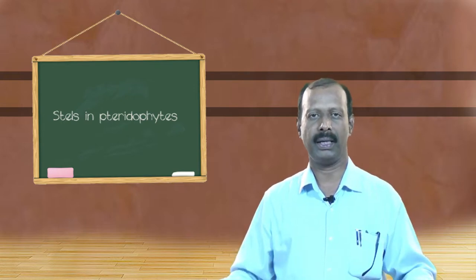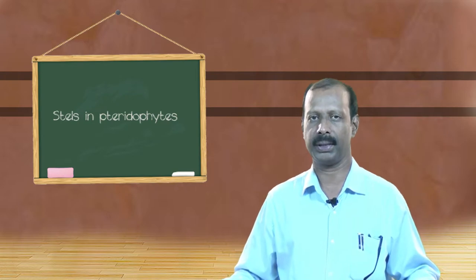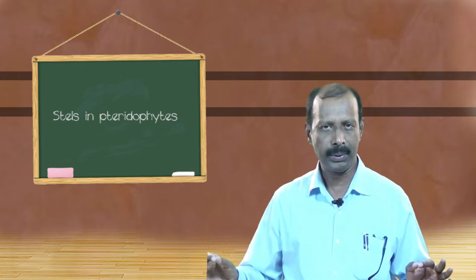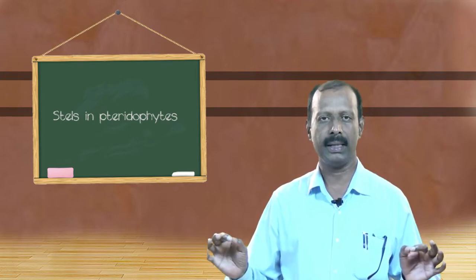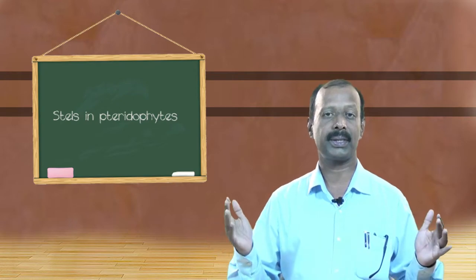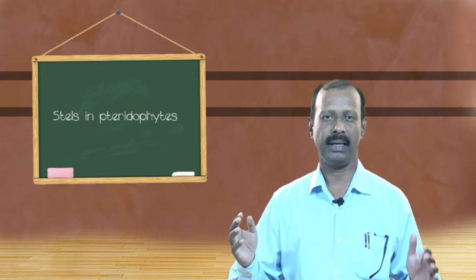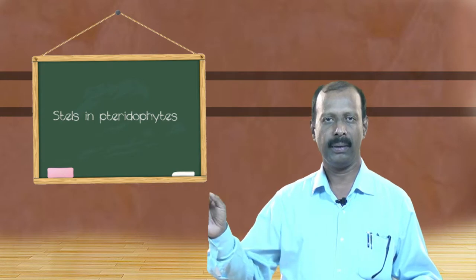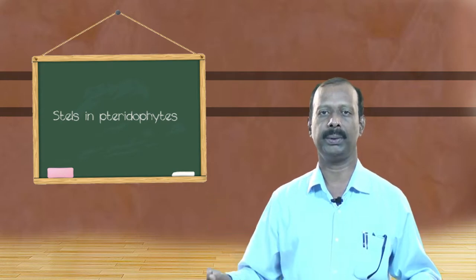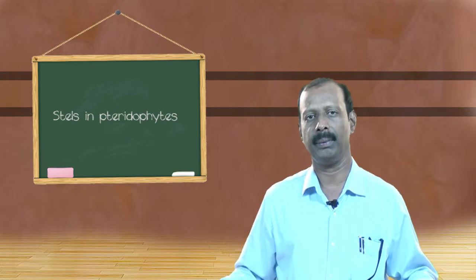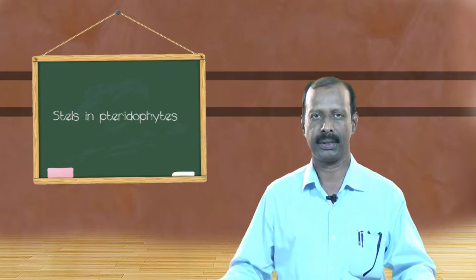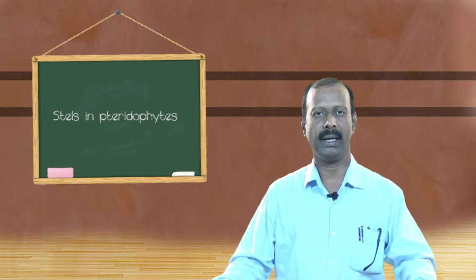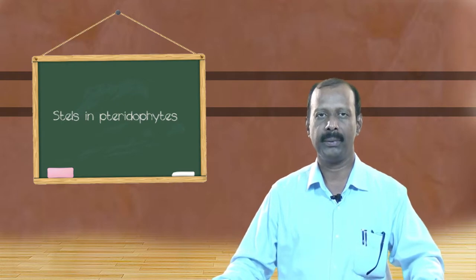The second type of protostele is actinostele. In actinostele, xylem is stellate or star-shaped. It is almost wavy with a smooth contour, and the xylem is surrounded by phloem cells. This type of stele can be seen in Lycopodium nudum and Lycopodium triquetrum.